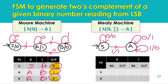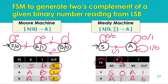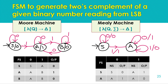For the Mealy machine transition table, we consider present state and input symbol together to determine the output. From state S: for input zero, next state is S and output is zero; for input one, next state is A and output is one. From state A: for input zero, next state is A and output is one; for input one, next state is A and output is zero. This is the complete Mealy machine transition table.